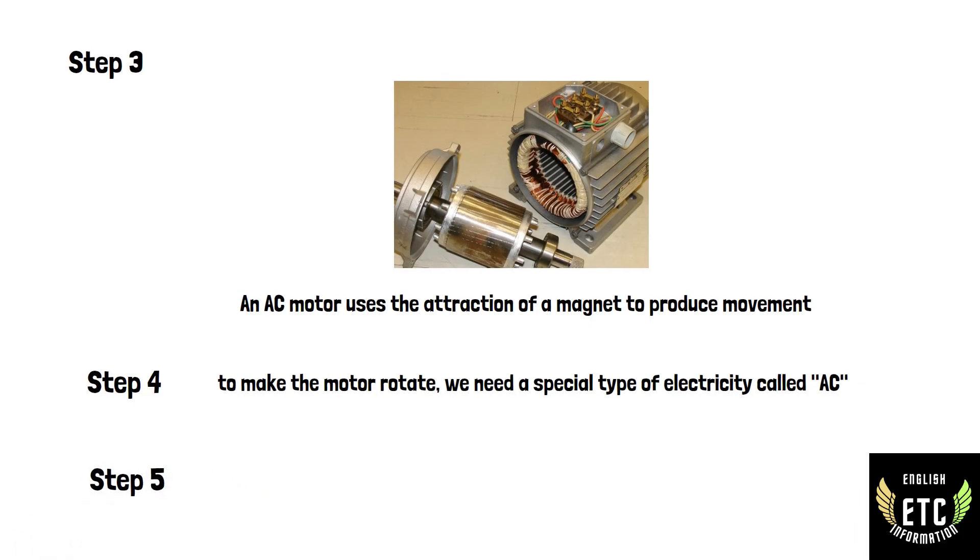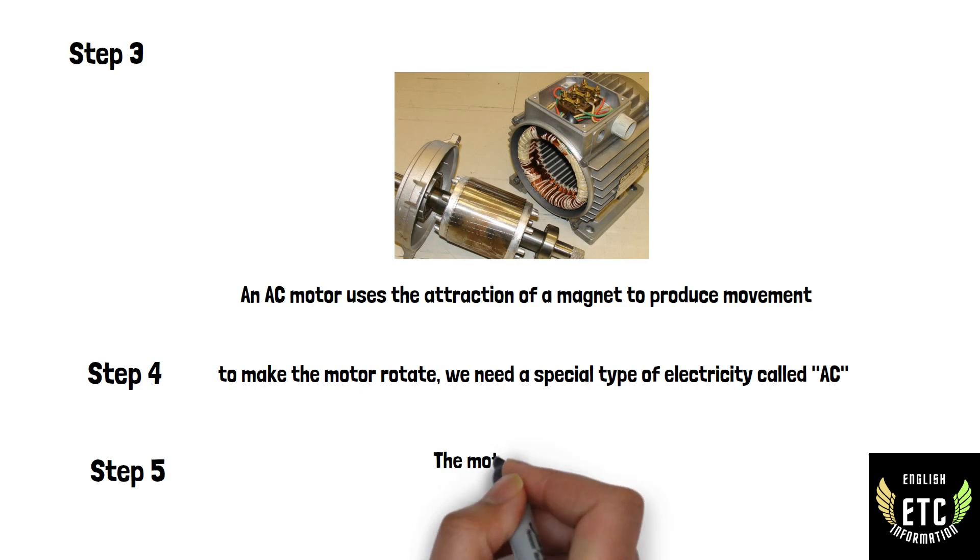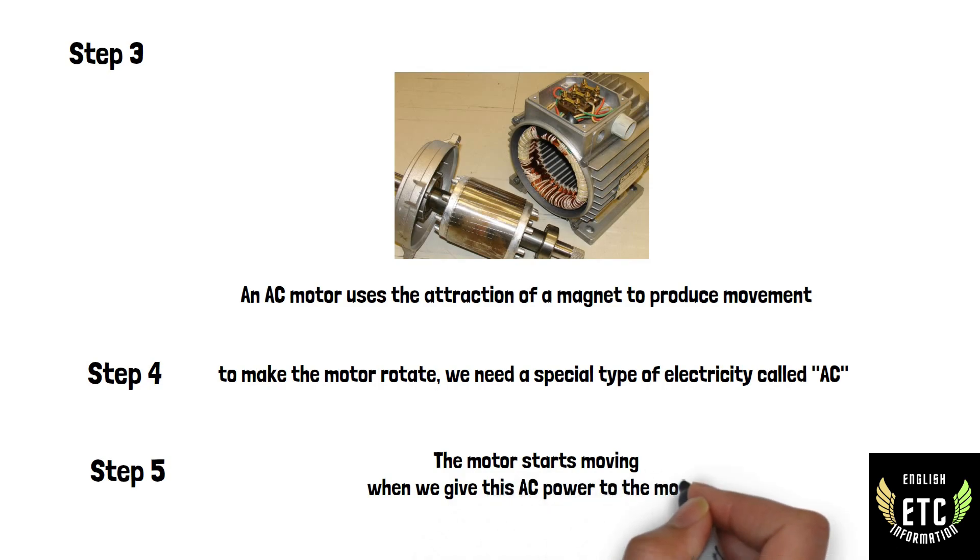Step five: the motor starts moving when we give this AC power to the motor. The magnets start moving. The magnets of the stator create a changing magnetic field and the magnets of the rotor start attracting them. Remember, the rotor can spin. So it begins to spin to follow the magnetic motion of the stator.